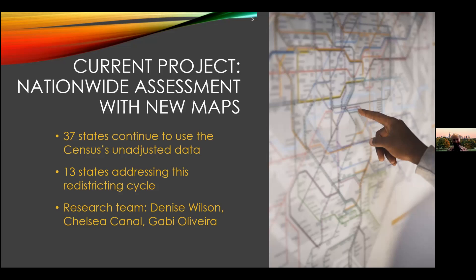But because it was the redistricting commission itself and not the legislature, we're going to have to make sure that in 2030 they do the same thing and ideally an even better job. The larger majority of states don't resolve prison gerrymandering — they simply take what the census gives them and run with it. And so if they have large prison populations, that may be biasing their redistricting.